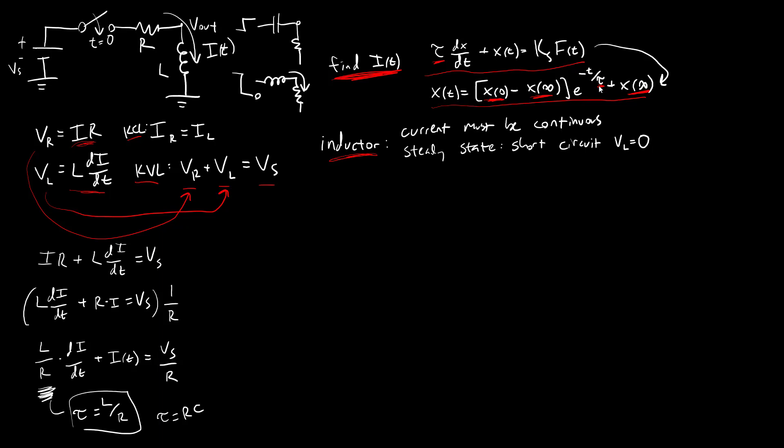We have one of the things we need in this equation. We have the time constant. We still need the initial and final conditions. For the initial condition, we're going to try and figure out what the current is immediately when the switch closes. That is where we can apply our continuity rule for an inductor.